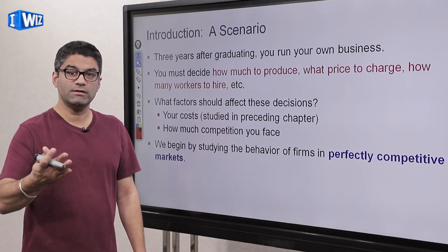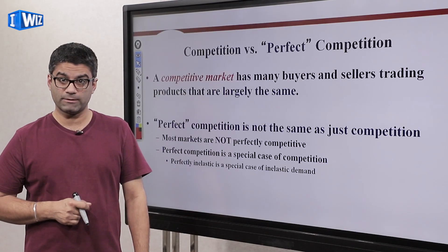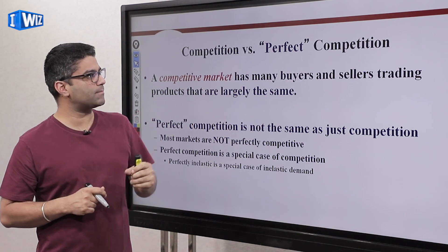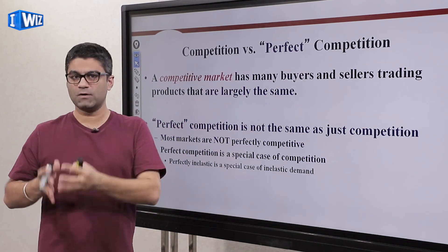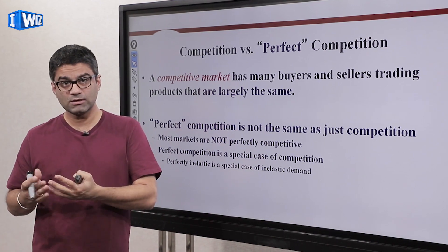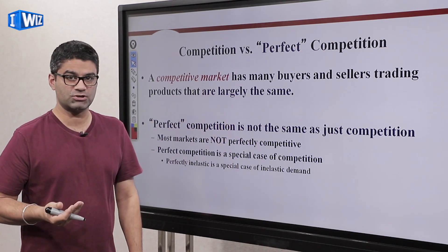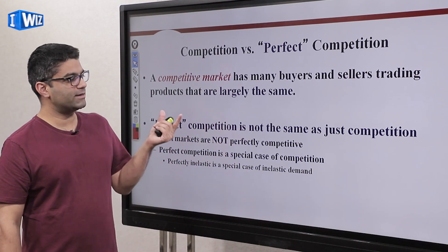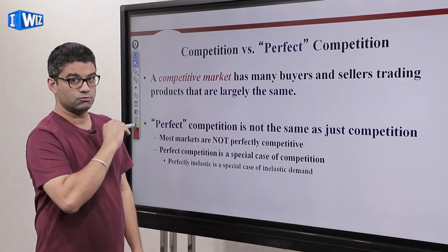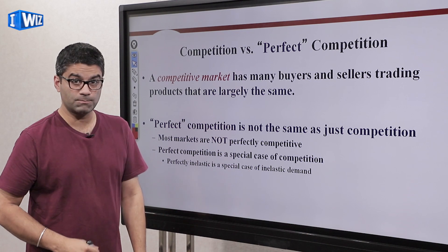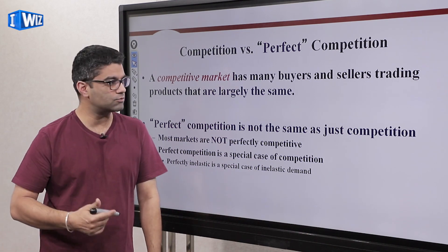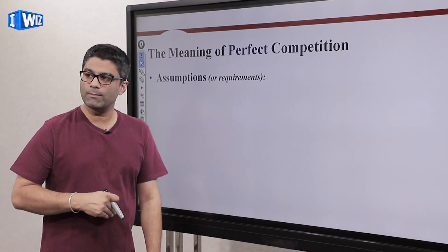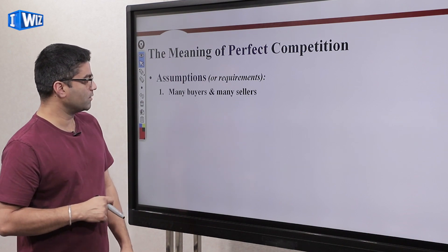Before we proceed, let's talk about what it means to produce in a perfectly competitive market. Most markets are competitive, but perfect competition is a strict, special case — just like perfectly inelastic was a special case of elasticity. A competitive market has many buyers and sellers, and perfect competition is just an extreme case of that. Don't confuse the two. Most markets are competitive but most are not perfectly competitive. Perfectly competitive markets are very hard to find in the real world, but we're going to talk about it to start with.